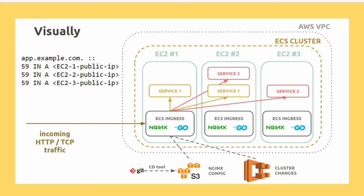ECS Ingress works by continuously querying the ECS APIs, determining which services are running on which ports, and reverse proxying to those services using internal networking. It also reads configuration from S3, continuously checks the bundle for freshness, and if changes are detected, the new configuration is deployed and automatically reloaded.